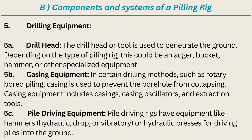Drilling Equipment — Drill Head: the drill head or tool is used to penetrate the ground. Depending on the type of piling rig, this could be an auger, bucket, hammer, or other specialized equipment. Casing Equipment: in certain drilling methods, such as rotary bored piling, casing is used to prevent the borehole from collapsing. Casing equipment includes casings, casing oscillators, and extraction tools.